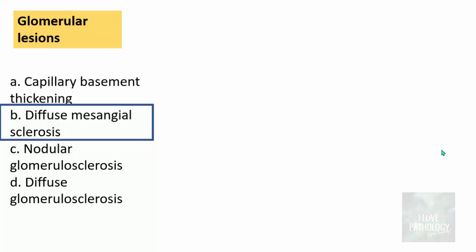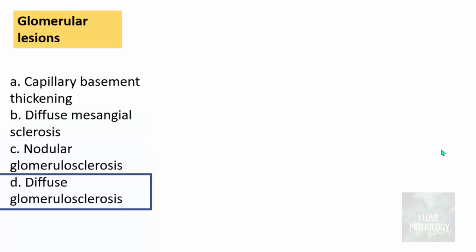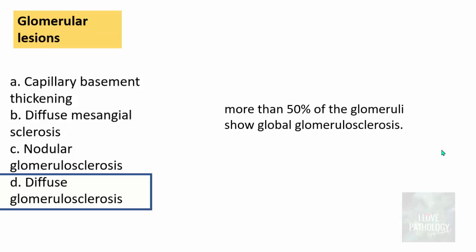Diffuse glomerulosclerosis means more than 50% of the glomeruli show global glomerulosclerosis — meaning the entire glomerulus is sclerosed. When more than 50% of glomeruli show this global involvement, it is called diffuse glomerulosclerosis. The vascular lesions predominantly consist of hyaline arteriolosclerosis, and tubular and interstitial lesions include pyelonephritis (acute or chronic, with or without papillary necrosis), as well as interstitial fibrosis and tubular atrophy in later-stage disease.